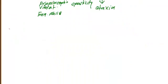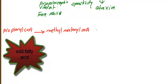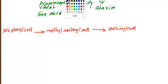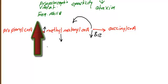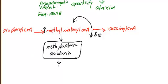From a biochemical standpoint: propionyl CoA leads to methylmalonyl CoA, and then to succinyl CoA. Vitamin B12 is required as a cofactor to convert methylmalonyl CoA to succinyl CoA. If vitamin B12 is insufficient, methylmalonyl CoA accumulates in the blood, leading to methylmalonic aciduria. This is toxic to the peripheral nerves and is the mechanism behind peripheral neuropathy.